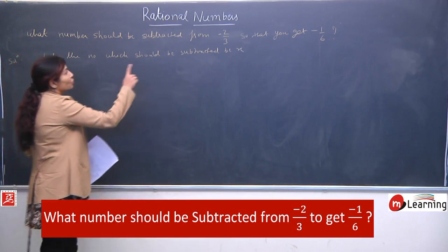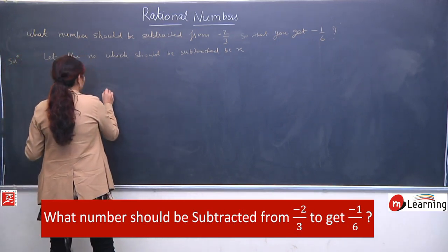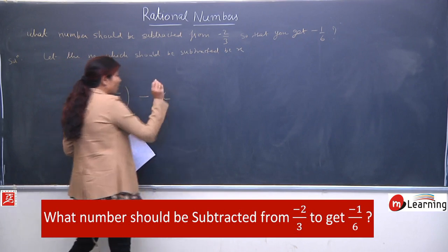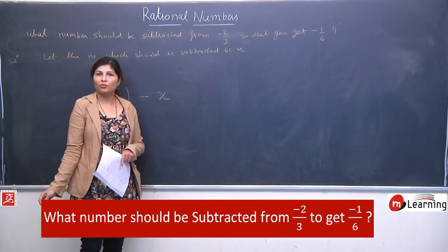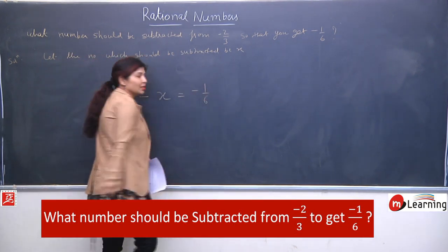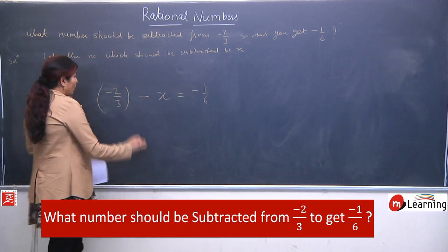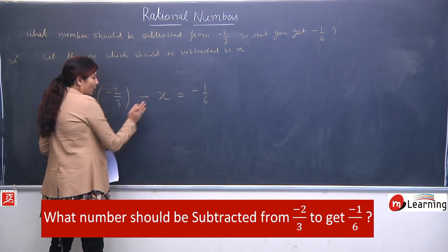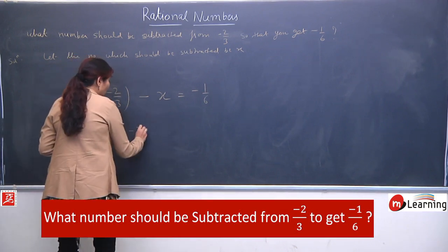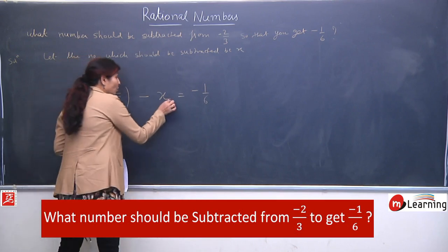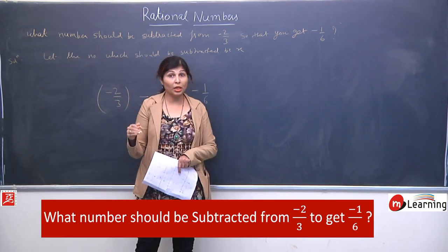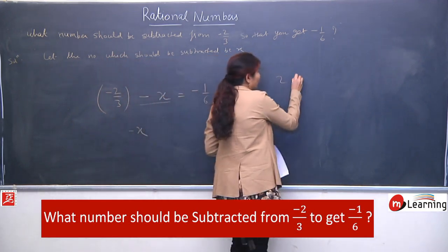Means hum ne man mein equation form ki. Yahan par rational numbers hain, hum directly answer nahi bata sakte without LCM. So hum ne equation form karni hogi: what should be subtracted from minus 2 by 3? Ham kya karenge? Number lenge. Kya subtract karna hai, hum nahi jaante, so we will write: let x should be subtracted from minus 2 by 3, we will get minus 1 by 6. Abhi tak mein ne aapko bataya ki jo bhi variable hai, usko nikalna hai — wo hum left side mein rakh lenge.